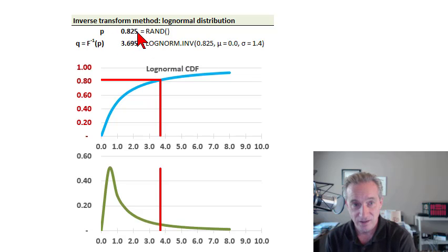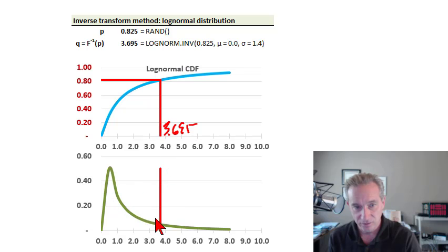I generate a random uniform value. In this case, it's 82.5%. And then I utilize the inverse cumulative distribution function or inverse CDF to tell me what is the corresponding random log normal value. And it'd be 3.695 here. So in other words, and if we could go down further, the area under this curve to the left of that value is 82.5%. But similarly, we can run several many times.